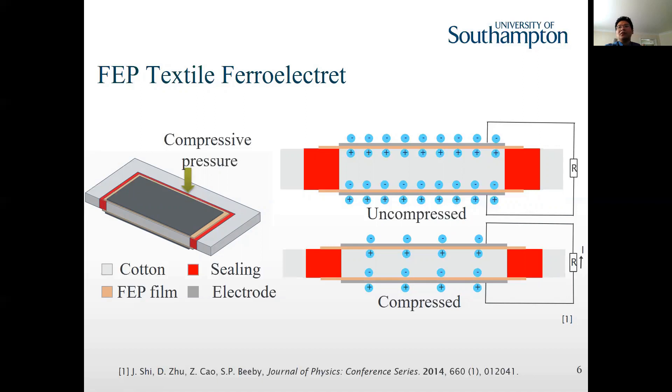The fundamental of the textile ferroelectret is similar to the typical ferroelectret. The function of the air void is replaced by the textile, which works as a mechanical separator. After electric charging, the positive and negative charges are separately stored on the polymer and textile interface. When compressive force is applied on the material, the dipole moment will change. The induced charge on the outer electrodes will also change. If the harvester connects to a circuit, a current will be generated.